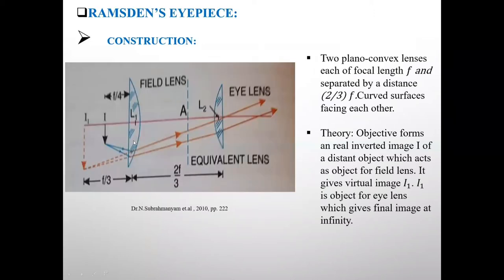So friends, this is a diagram of Ramsden's eyepiece. Here, two plano-convex lenses, L1 and L2, are there. Each has focal length F, and the distance between these two lenses is 2/3F. The curved surfaces are facing each other. This is the field lens, and this is the eye lens.